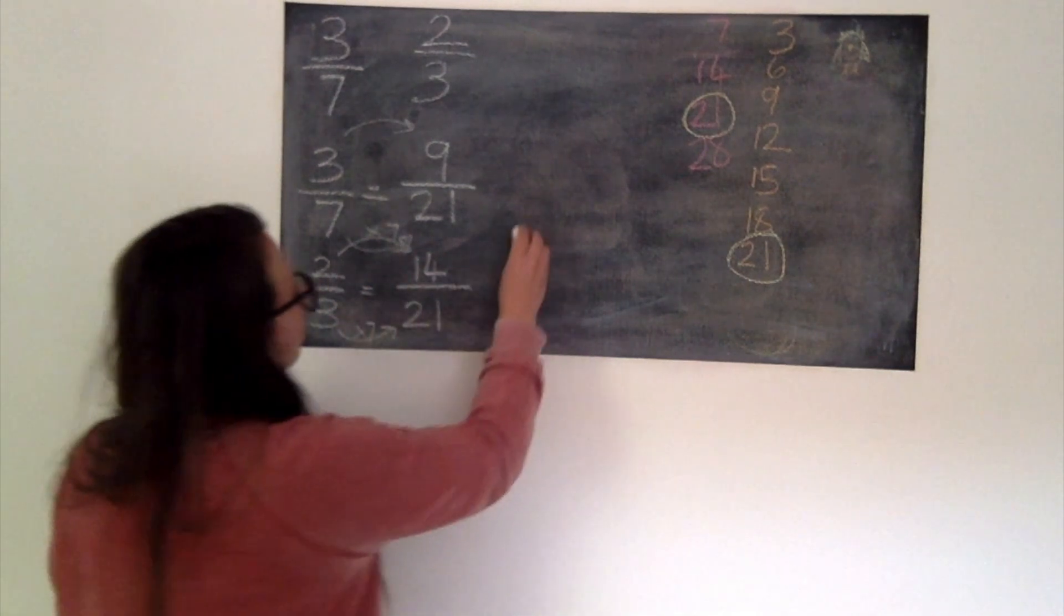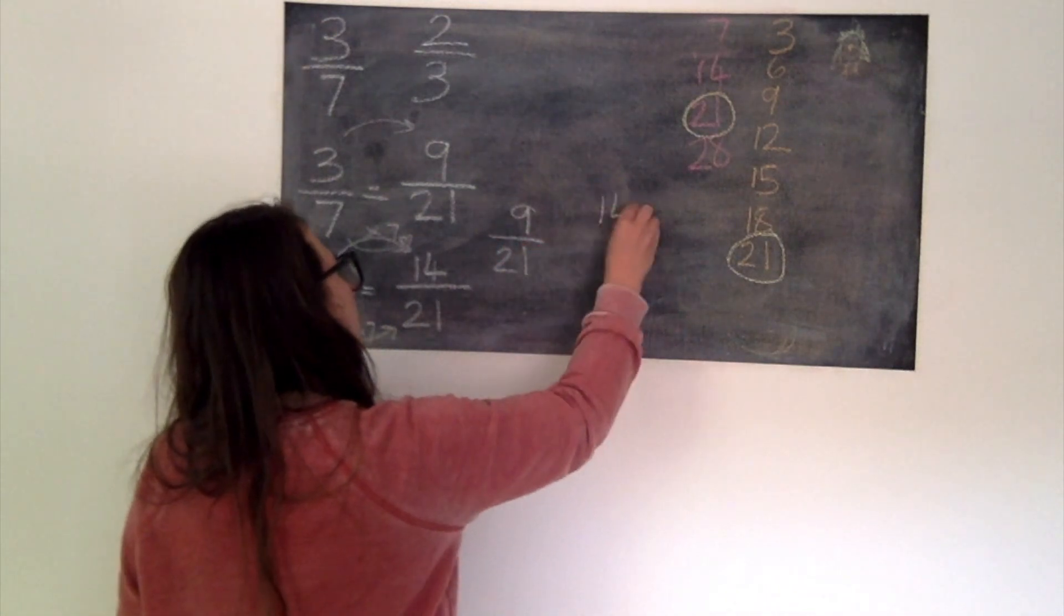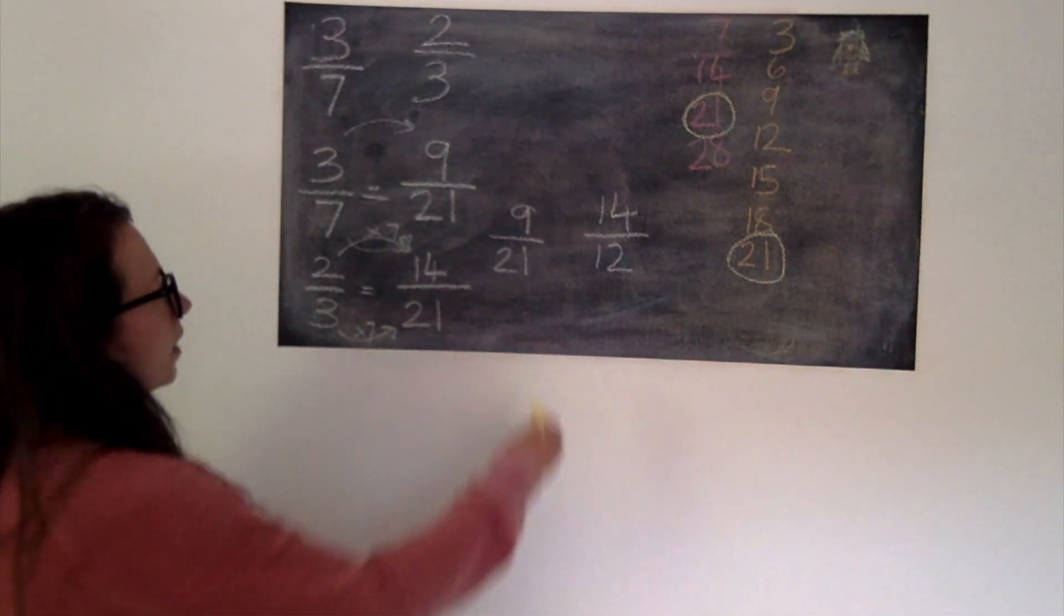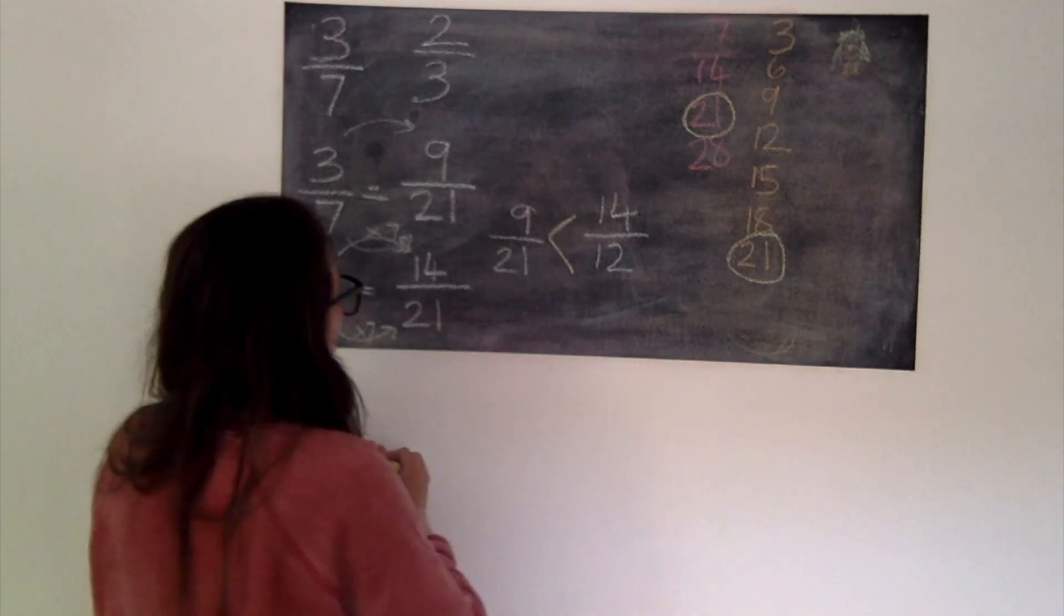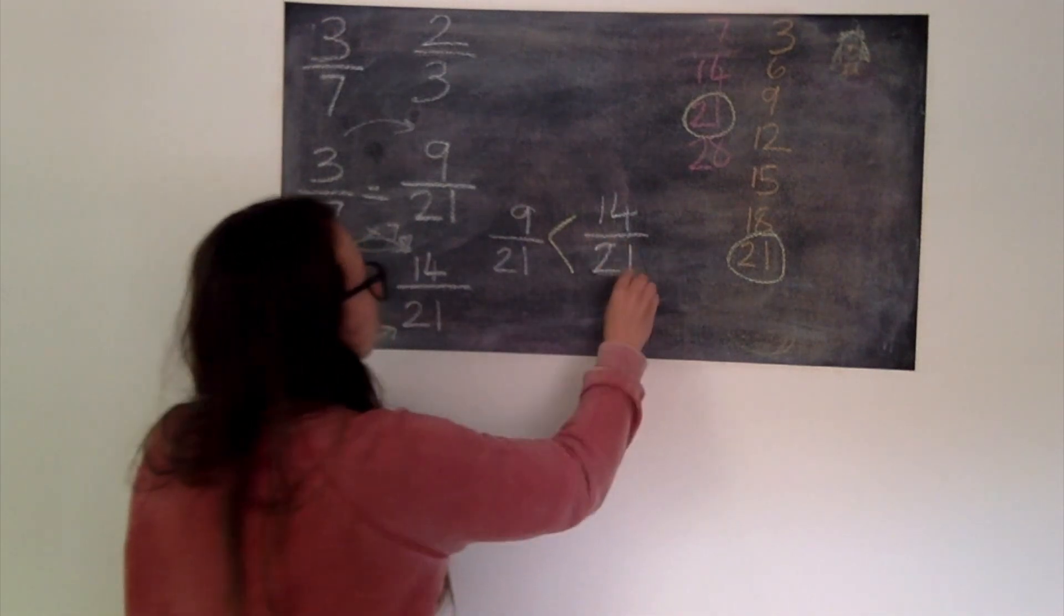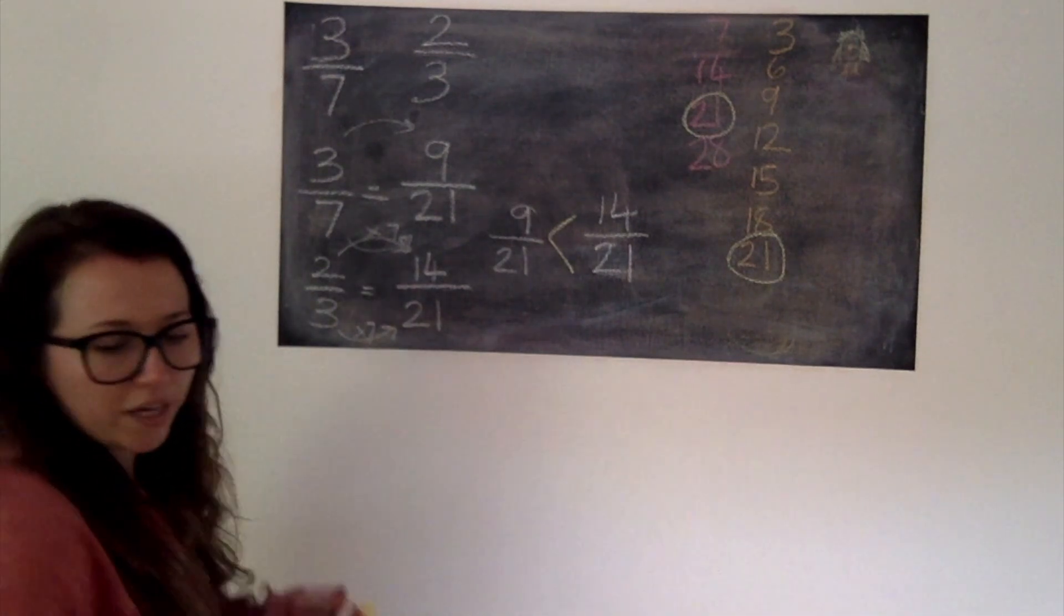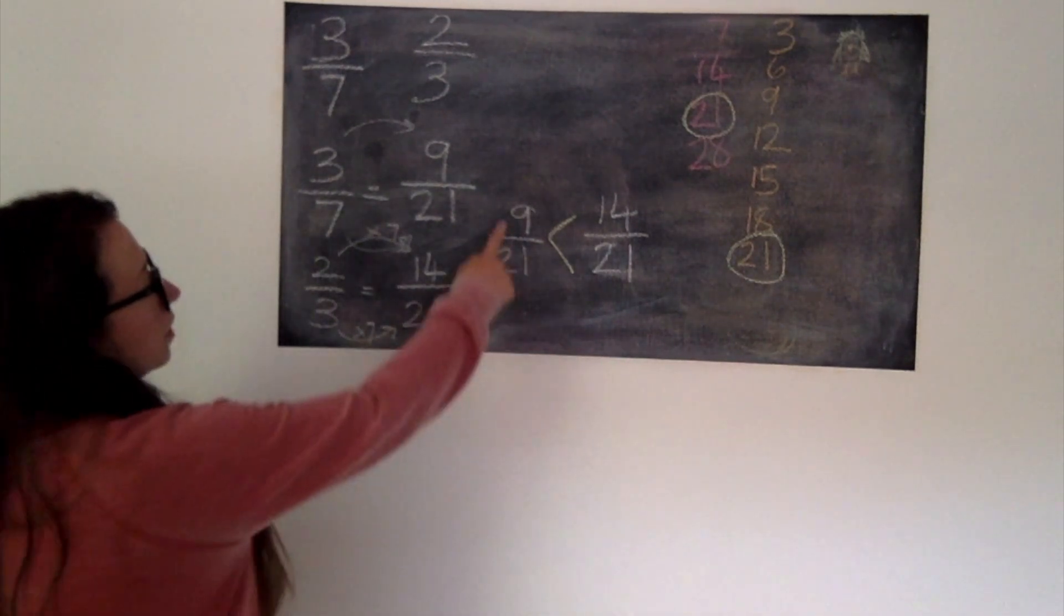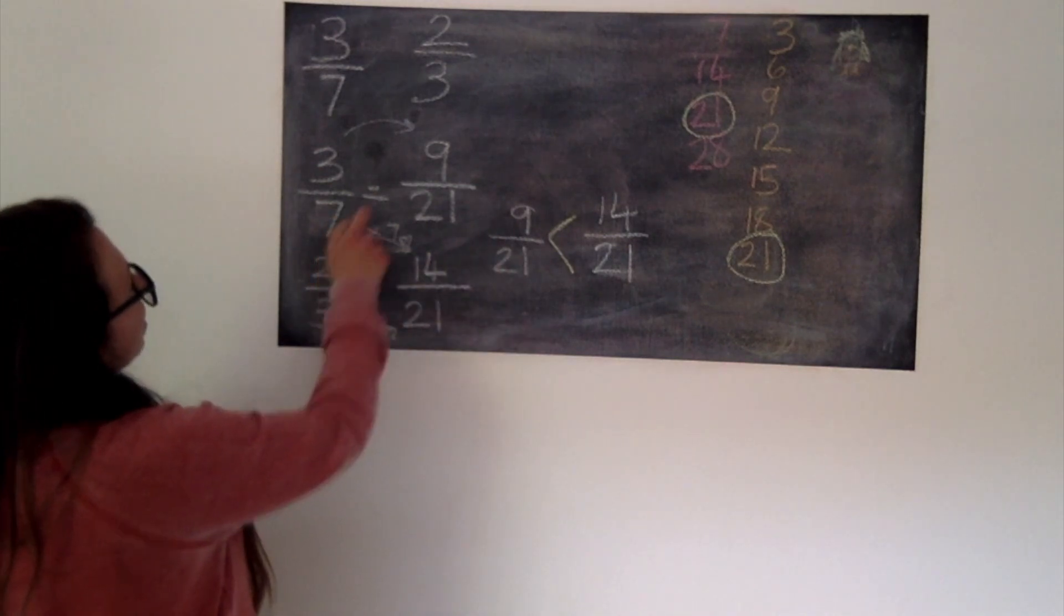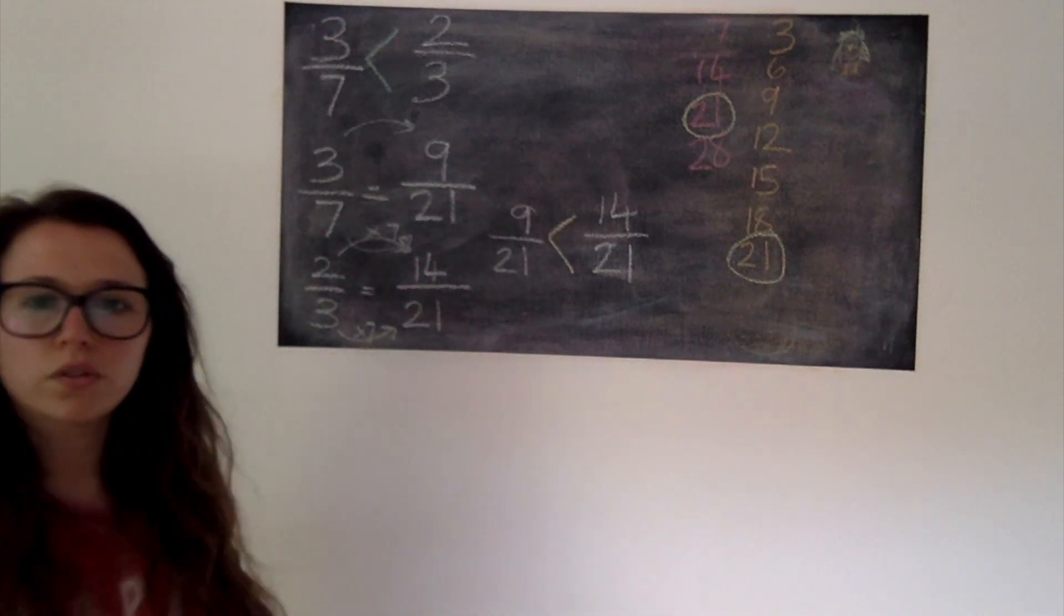Now I have 9/21sts and 14/21sts. And I can see that 14 is bigger than 9 because our denominators are the same. So going back to our original fractions, 9/21sts was the smallest and that's the same as 3/7ths. Therefore 3/7ths is less than 2/3rds.